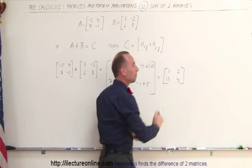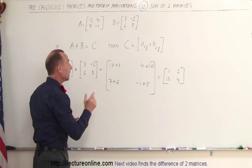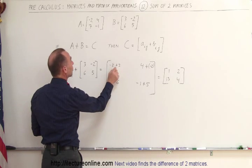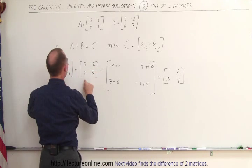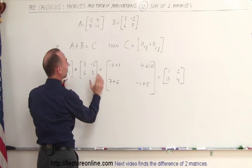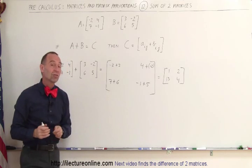and that will then be the sum of A plus B. So we simply add the elements together in the same location. Negative 2 plus 3, 4 added to negative 2, 7 added to 6, negative 1 added to 5, and that's how we add matrices.